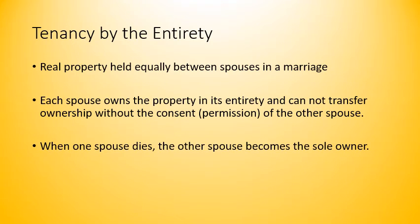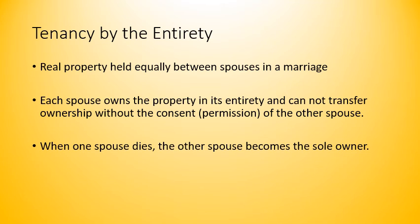The last co-ownership form is tenancy by the entirety, which occurs between spouses in a marriage. This is real property held equally between spouses — they have equal rights to the land and the home. In fact, each spouse actually owns the property in its entirety, so they both own it entirely at the same time. Neither can transfer ownership without the permission of the other spouse — they must come to an agreement if there is going to be any change of ownership.